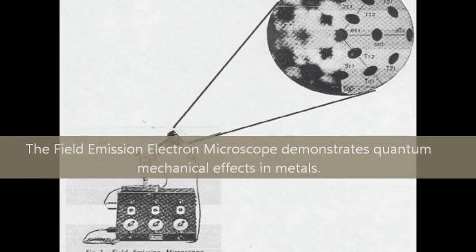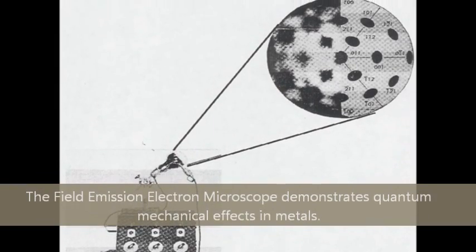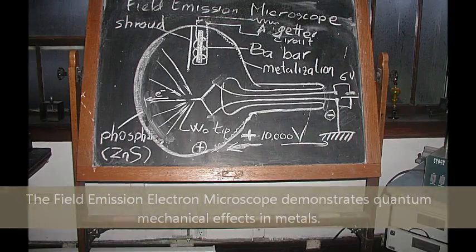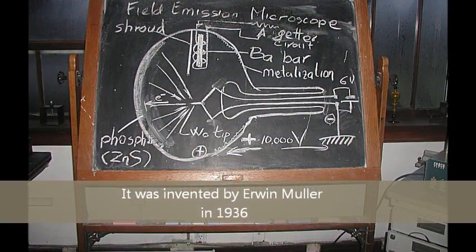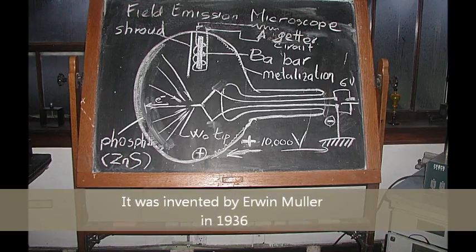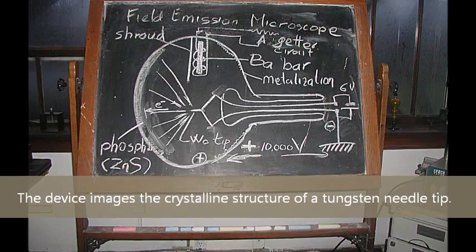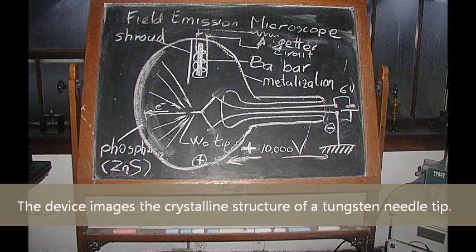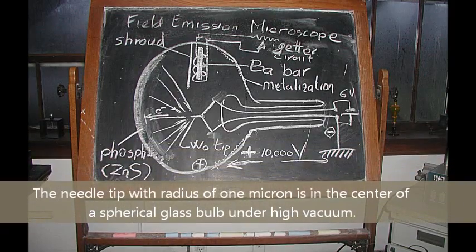The Field Emission Electron Microscope demonstrates quantum mechanical effects in metals. It was invented by Erwin Müller in 1936. The device images the crystalline structure of a tungsten needle tip with a radius of 1 micron.